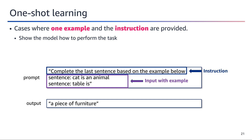One-shot learning refers to cases where a single example and the corresponding instruction are provided to the model to demonstrate how to perform a specific task. The example serves as a guide, allowing the model to understand the task requirements and generalize from that single instance. For example, the prompt provides an example sentence 'cat is an animal' and asks the model to complete the next sentence 'table is'. The model's output, 'a piece of furniture', correctly identifies the category following the pattern established by the example.